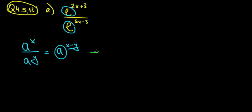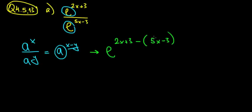Applying this to our example: we keep the base e, then subtract the powers — 2x plus 3 minus, and we take in brackets 5x minus 3. Make sure to always use brackets when subtracting, because the signs might change. For instance, minus with a minus will become a plus.